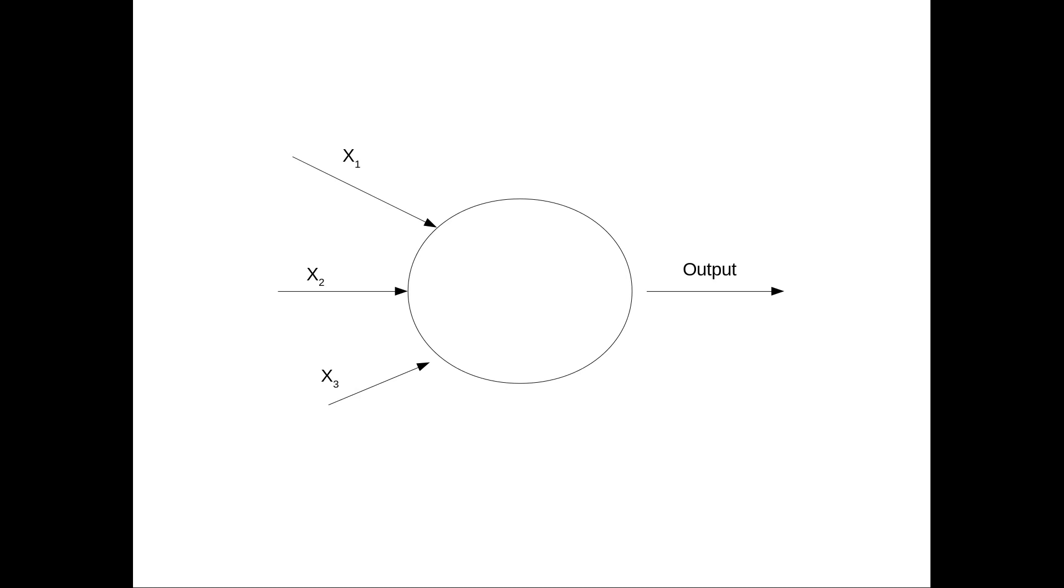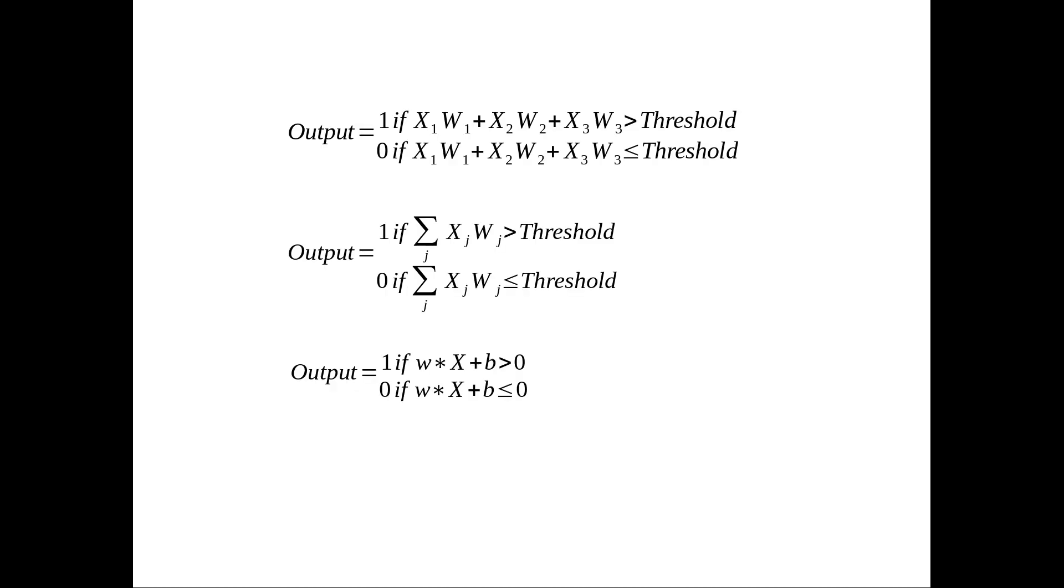So now the question becomes: what goes in that circle? Here's the math. If we look at this very top one, we can see that this is basically a linear function. We take those x's, the input values, multiply them by weights, and if that value exceeds some threshold that we set, we output a one, otherwise we output a zero.